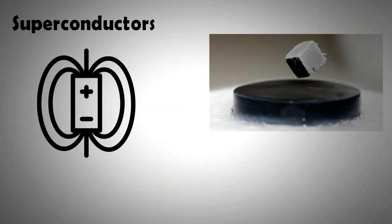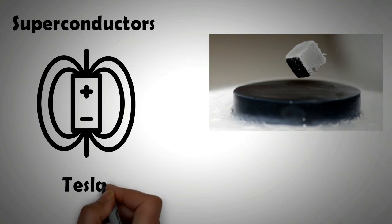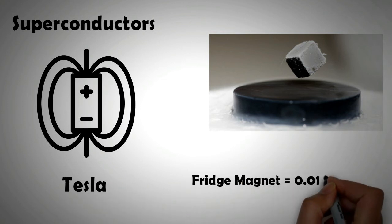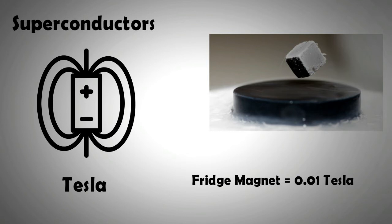The strength of the magnetic field is measured in Tesla. For comparison, a strong fridge magnet has a magnetic field of only 0.01 Tesla.